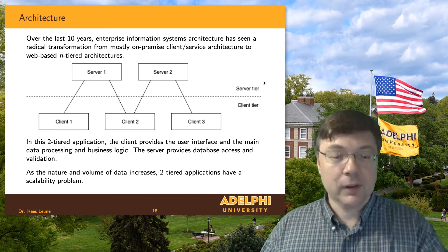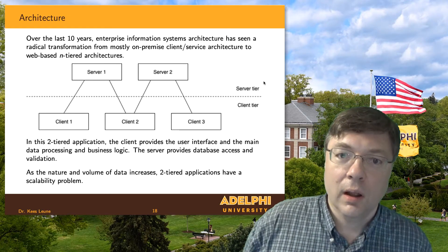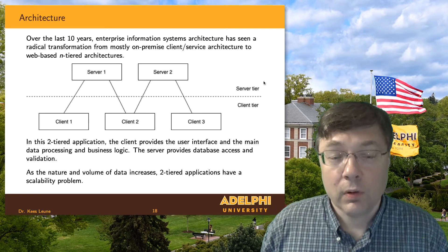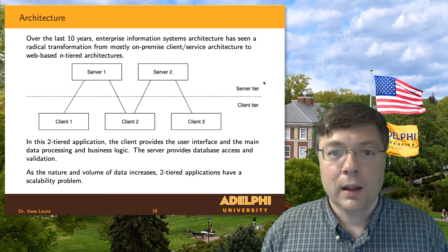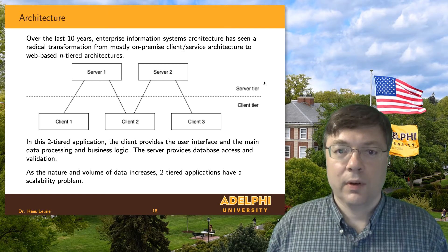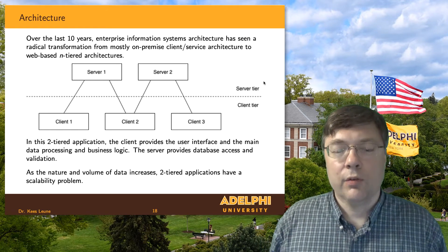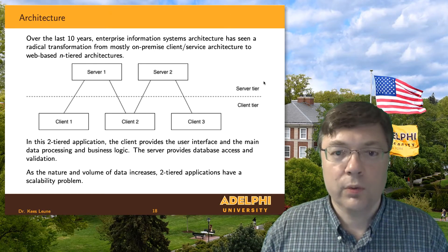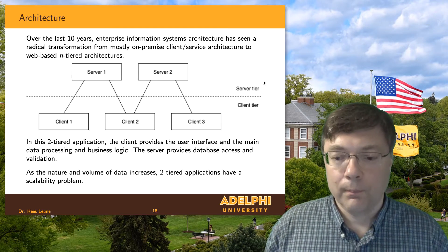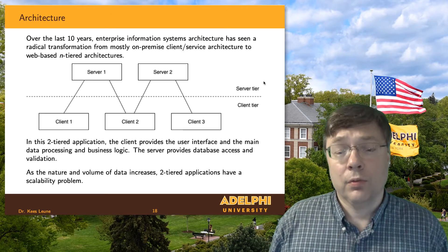The benefit of client-server was that it was fairly easy to distribute logic between what you process on the front end and what you process on the back end. The server was the back end, the front end was the client. Typically, crunching large amounts of data would happen on the back end, but anything computationally intensive related to user interfacing would happen on the front end, allowing for a fairly even distribution of workload. But data grew and kept growing, and the amount of data we have now is mind-blowing compared to 10 years ago. As a result, client-server started to hurt — it didn't really fit as well anymore — and we had to come up with a different architecture.